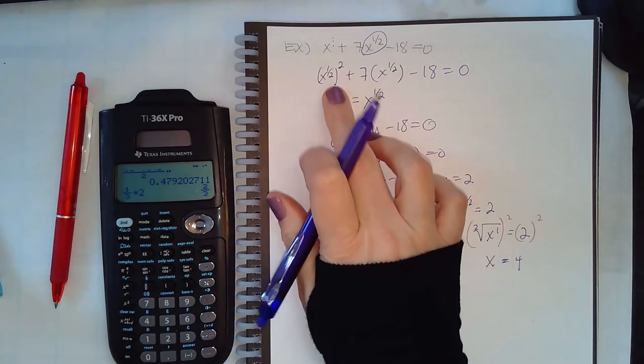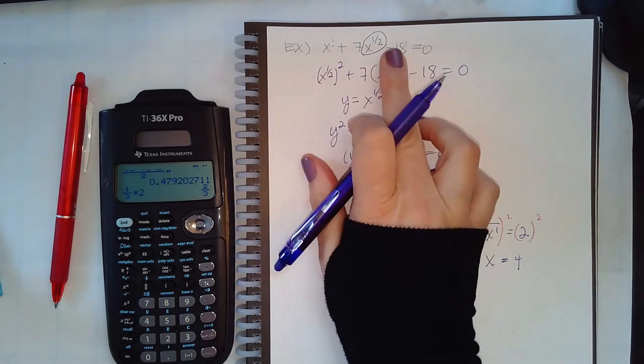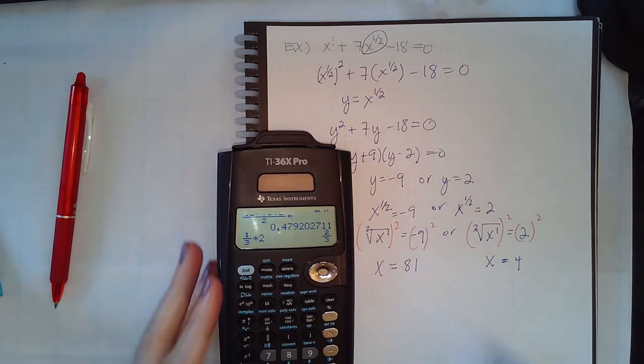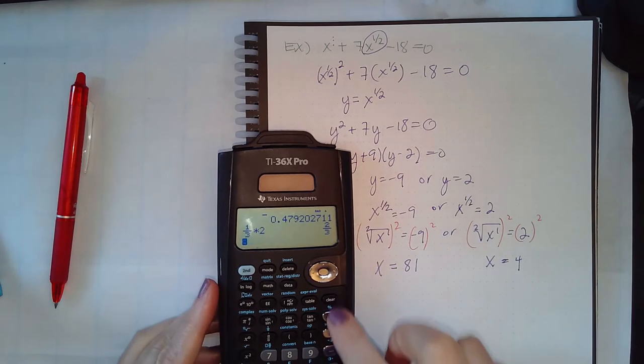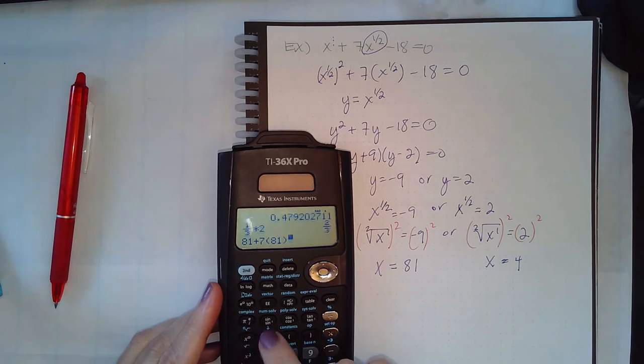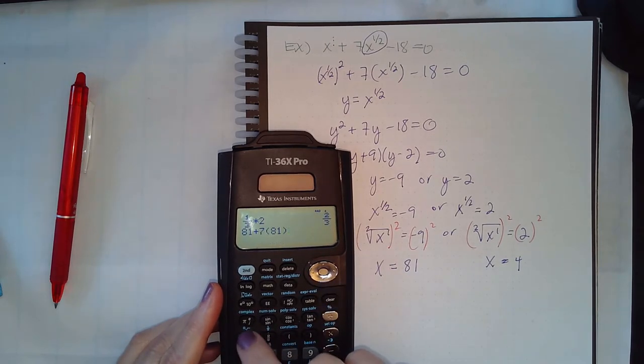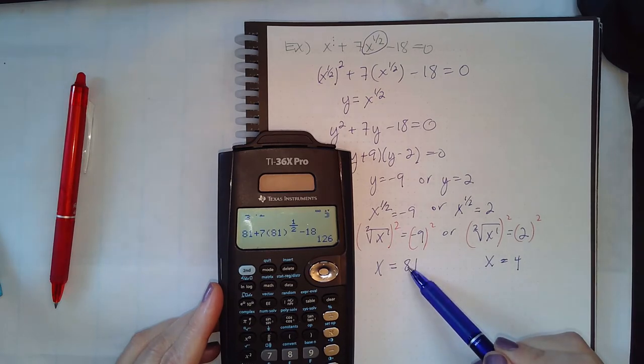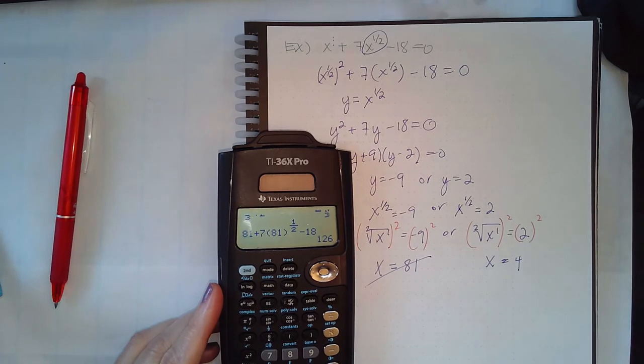So we get x equal to negative nine times negative nine, which is 81, and x equals two times two, which is 4. Now here we're doing the square root, right? The one-half power represents the square root. So in this case, we may need to check our answers. So let's see: 81 plus 7 times 81 raised to the one-half minus 18. This leads me to get 126, which is not correct, so this is not a solution.